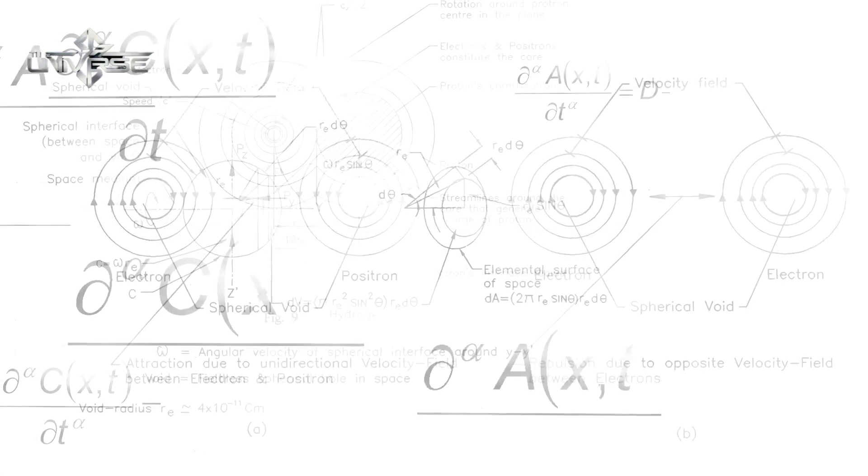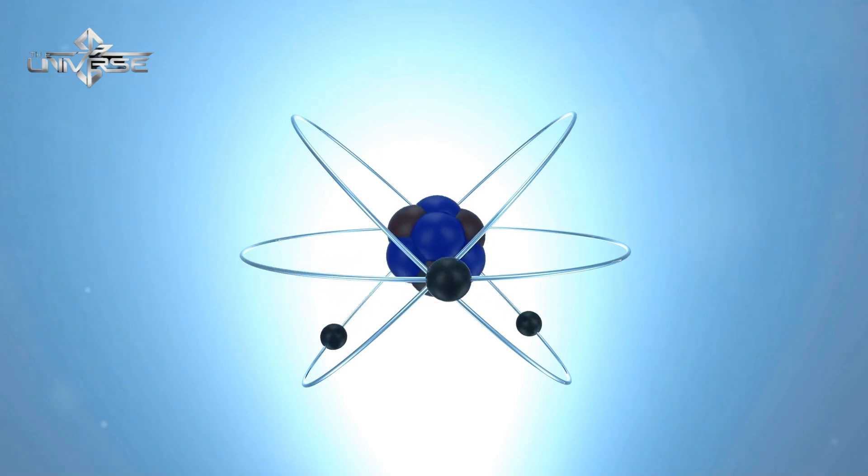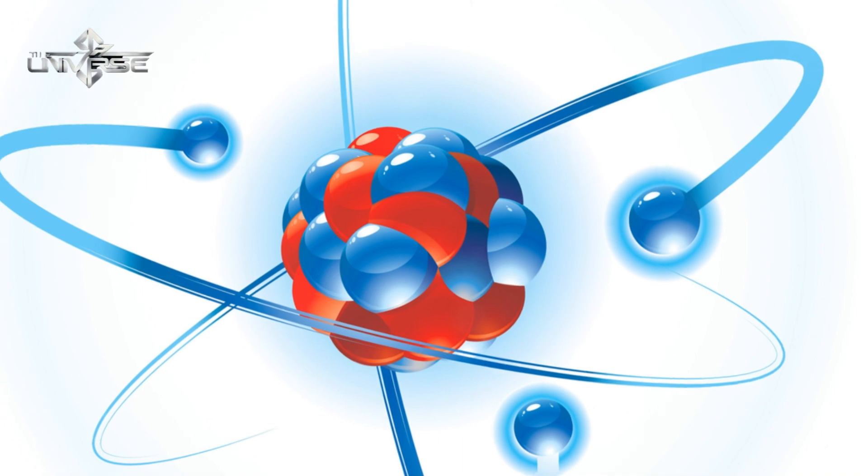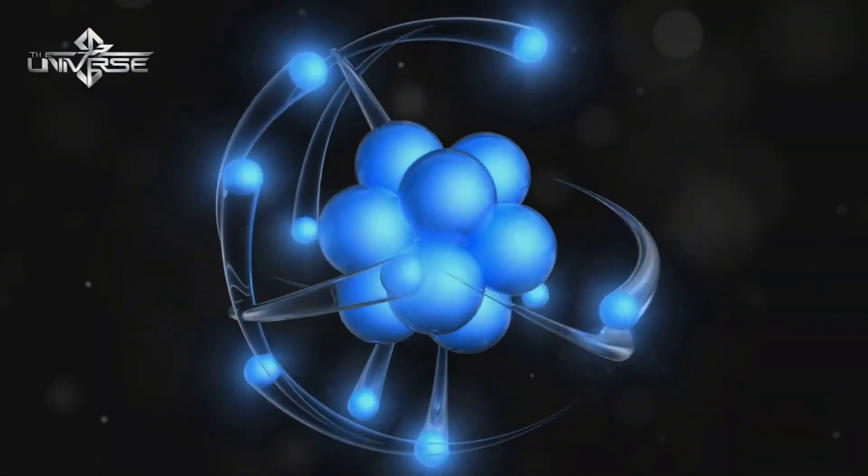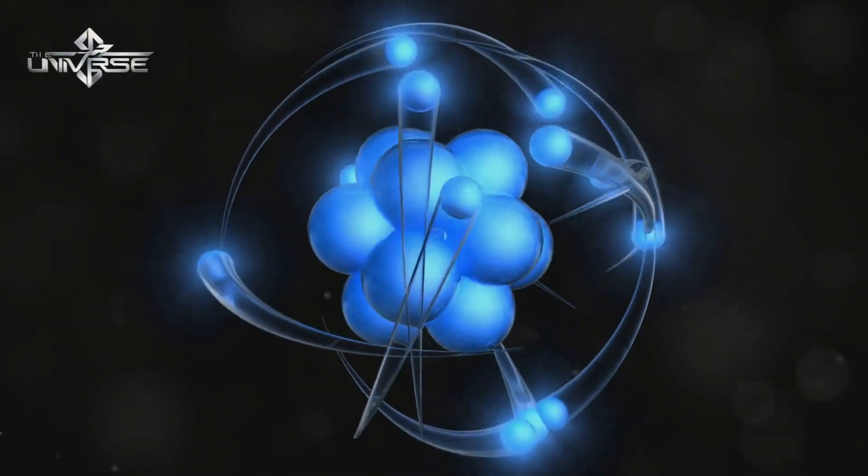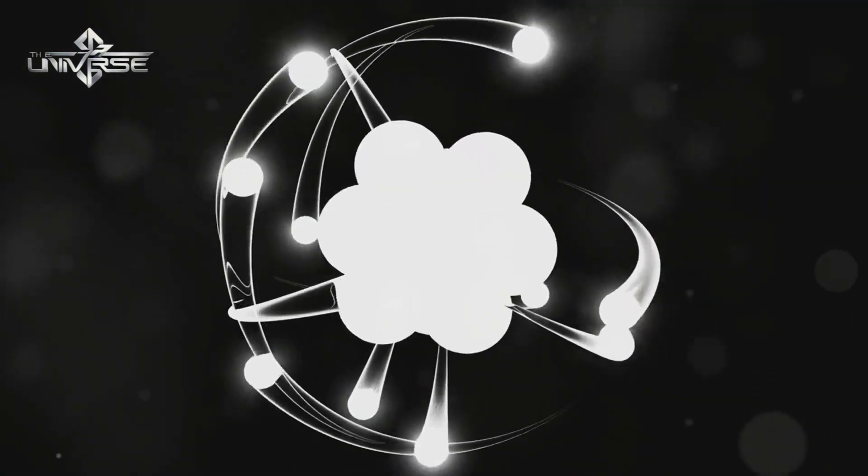The answer lies in the mysterious world of quantum mechanics and something known as electromagnetic forces. You see, while atoms are mostly empty space, the electrons that orbit the nucleus are not just sitting there idly. They're moving incredibly fast. So fast that they create what can be thought of as an electron cloud.